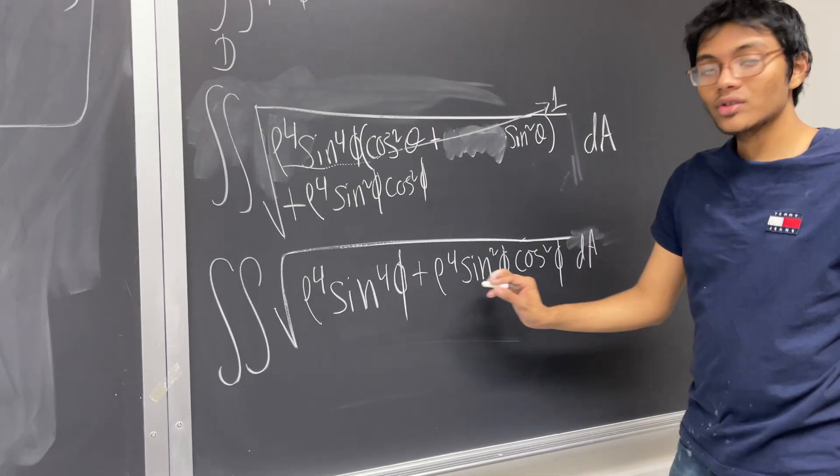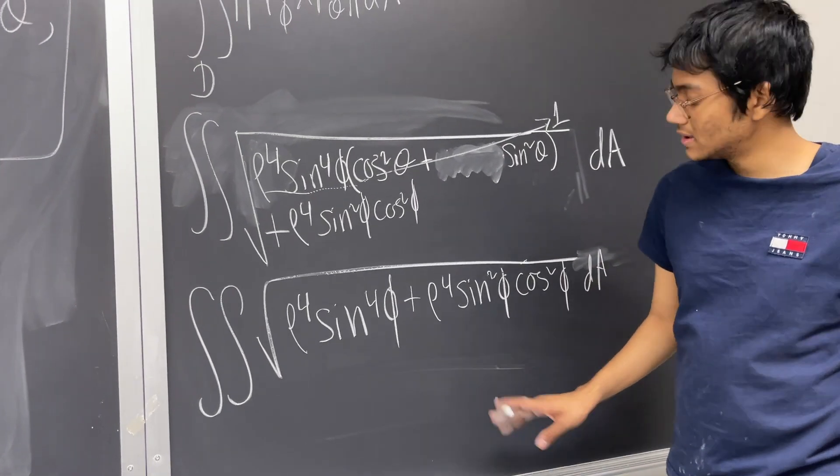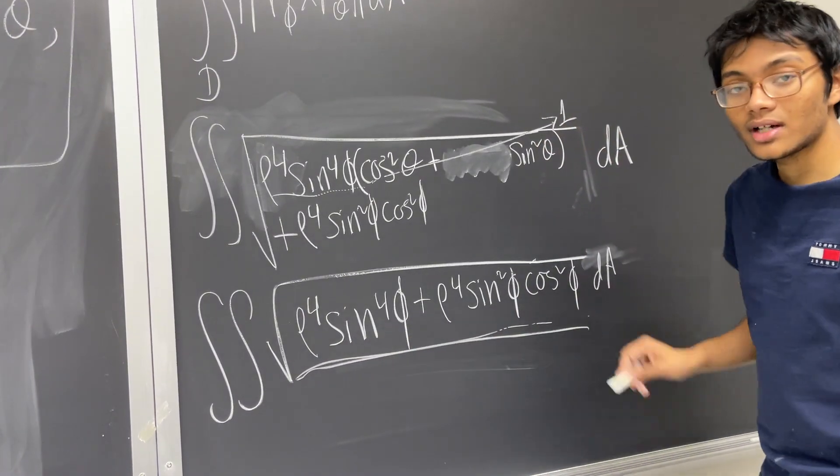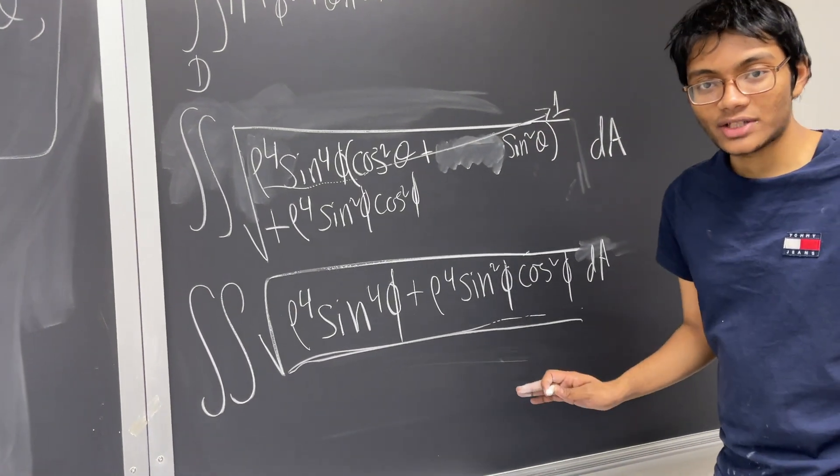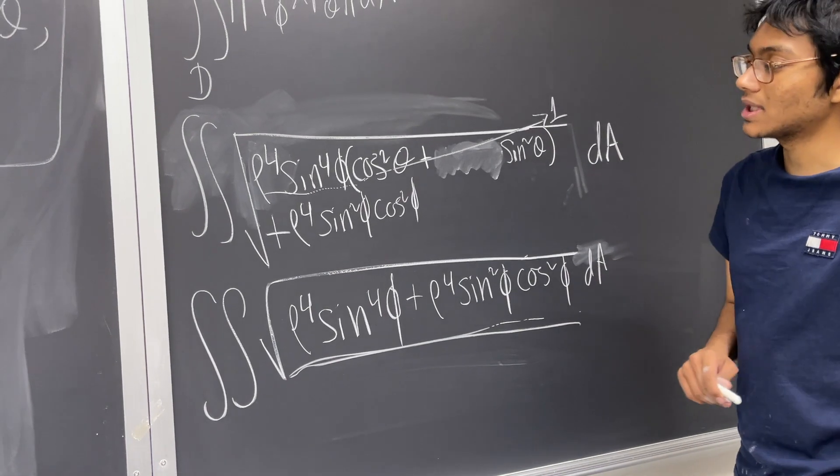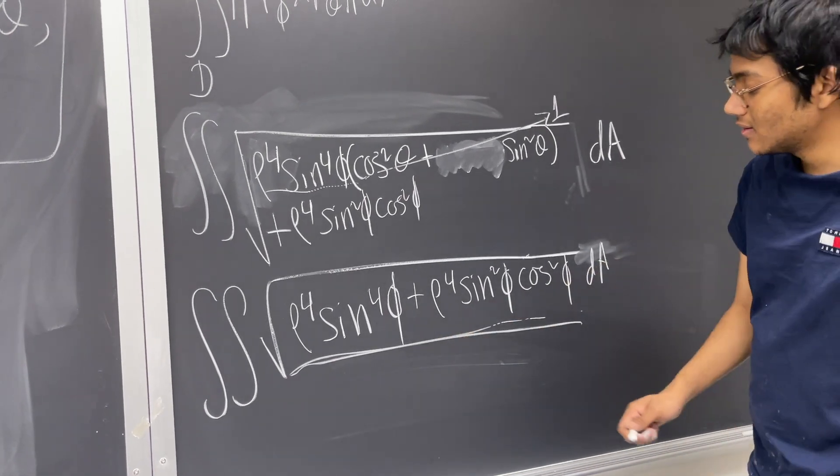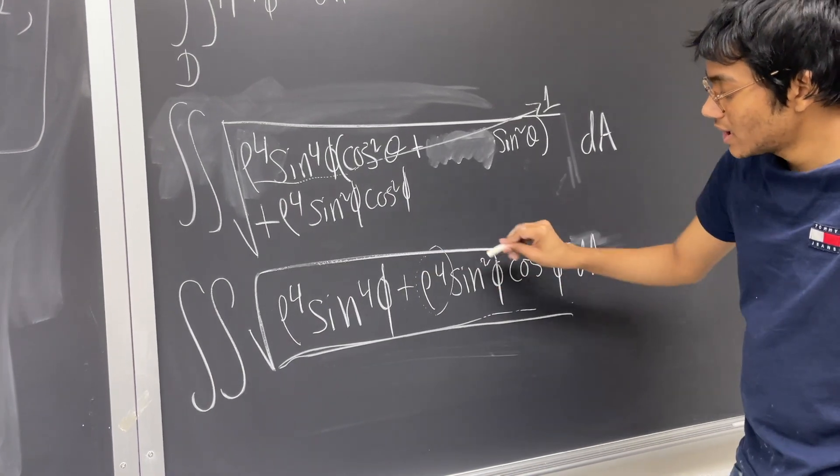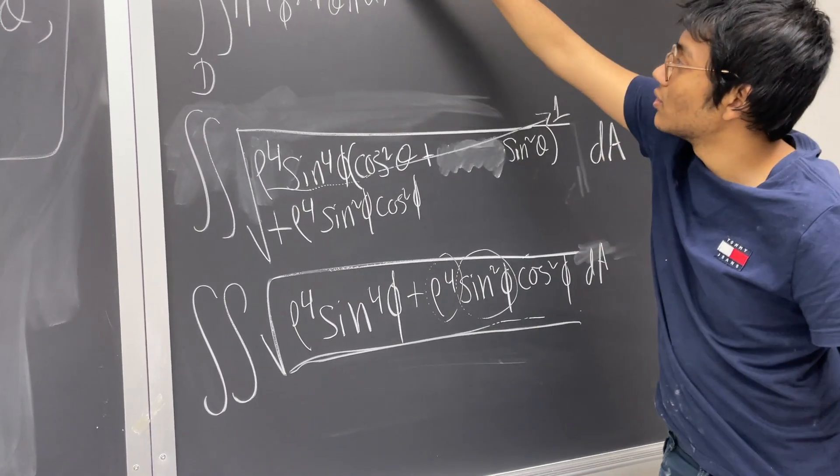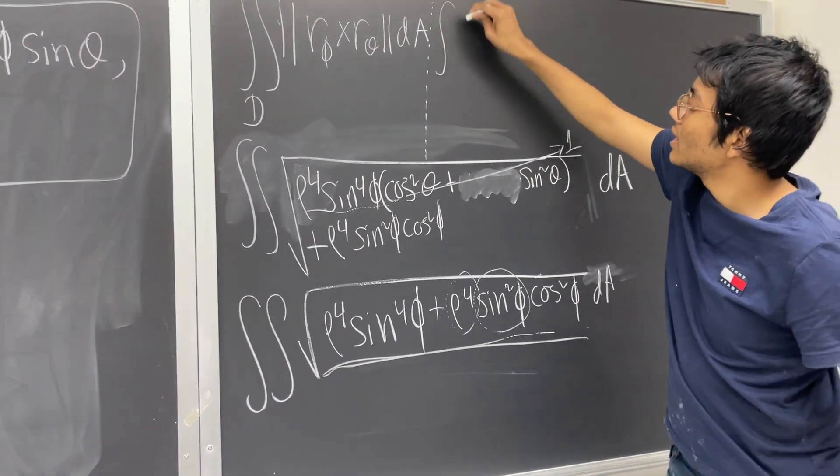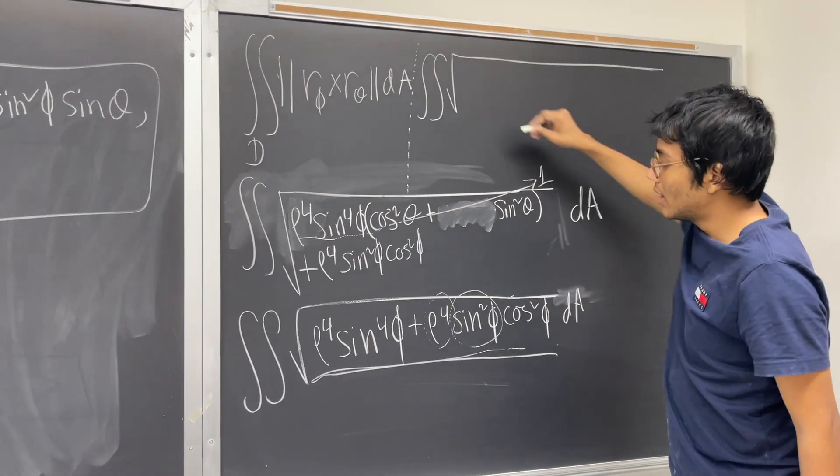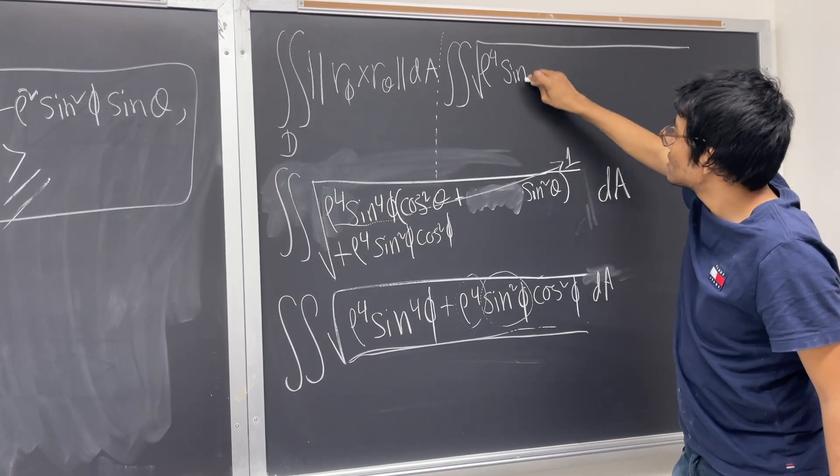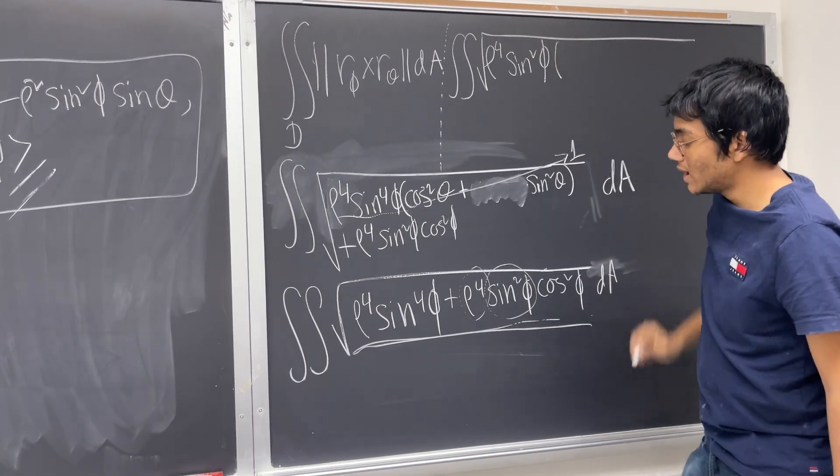Okay, so now if you look at this, this looks like a lost cause. How in the world are you going to integrate this? But fear not, this problem has been manufactured so that you can solve it precisely. So look at this and look at what you can factor out. You can not only factor out this rho to the fourth, but also a sine squared phi. So if I do that, if I factor out a rho to the fourth, a sine squared phi, then what do I have on the inside?